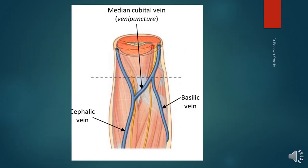The median cubital vein is the most preferred vein for venipuncture. It is the vein of choice for intravenous injections, withdrawing blood from donors, or cardiac catheterization because it is fixed by perforators and does not slip away during piercing. When the median cubital vein is absent, the basilic vein is preferred over the cephalic vein because the basilic vein drains into the axillary vein in a straighter path, whereas the cephalic vein bends acutely.